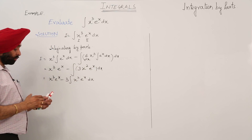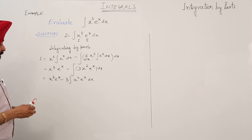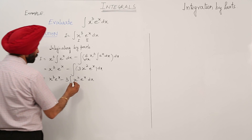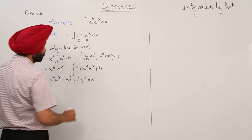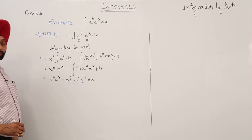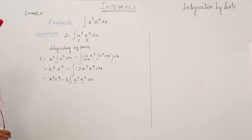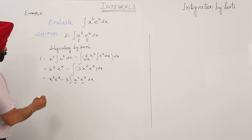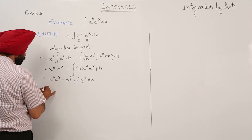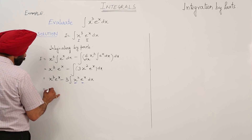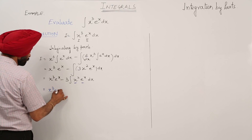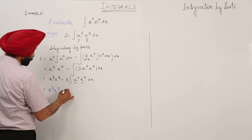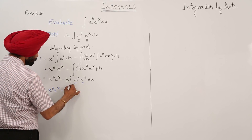Now again we are having two different types of integrals here, so again this will become x cube e raise to power x minus 3 times the next integration.